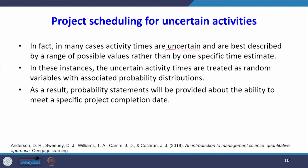In the previous lecture, we found the schedule of each activity by having one specific time estimate. But in this lecture, we are going to estimate the project schedule for activities having a range of possible values. In these instances, the uncertain activity times are treated as random variables with associated probability distributions.